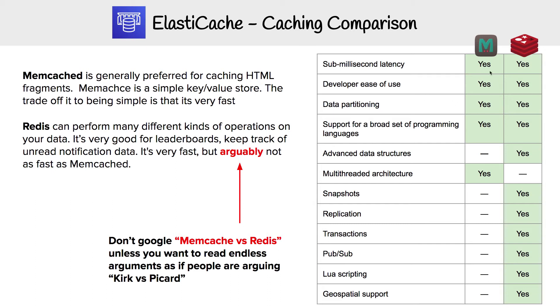You can see that Redis can do snapshots, replication, transactions, pub/sub, and geospatial support. So you might think that Redis is the clear winner here.